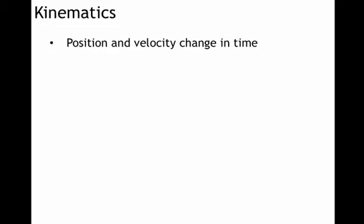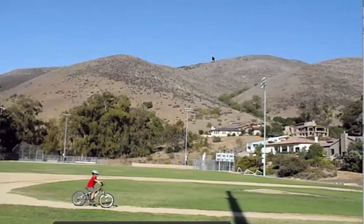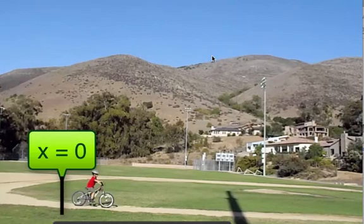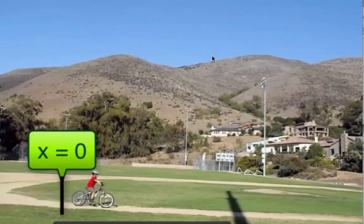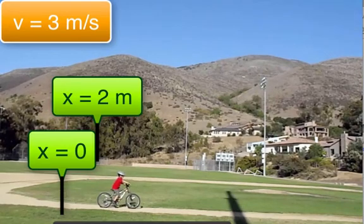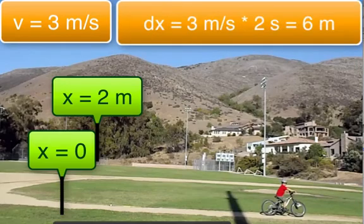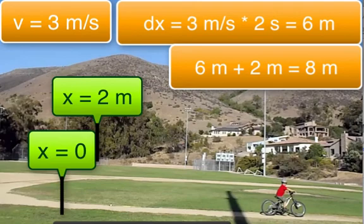Kinematics is simply when we look at our position and our motion and explain it with math. Let's say that this is zero meters right here. Therefore, Neil would start at two meters and he's moving along at a constant velocity of three meters per second. Every second he moves three meters. So after one, two seconds, he should have moved six meters and is now at eight meters.